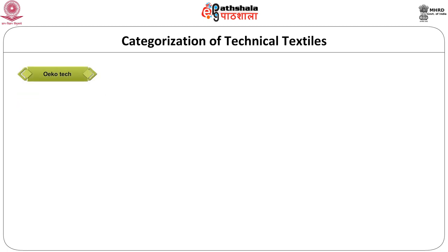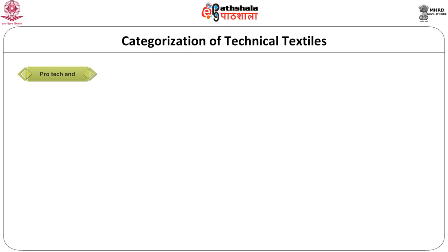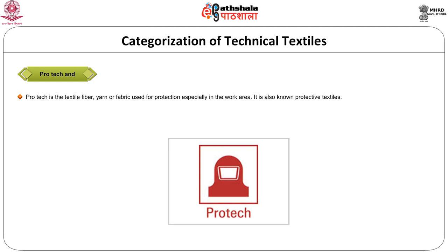The next category is oak tech. This includes textile material used for protection and environment. It is represented by a tree with a semi-circle indicating a rainbow above. Generally, natural fibers are used for making oak tech.